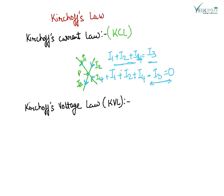The second law is Kirchhoff's Voltage Law, KVL. It states that the algebraic sum of the products of currents and resistances in each conductor in any closed path in a network, plus the algebraic sum of the EMFs in that path, is zero. This can also be written as: sum of all EMFs plus sum of IR drops equals zero.